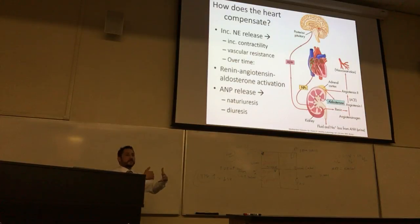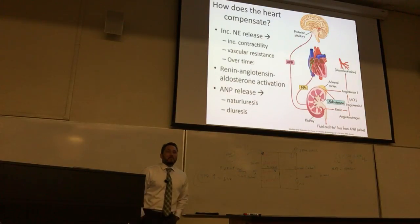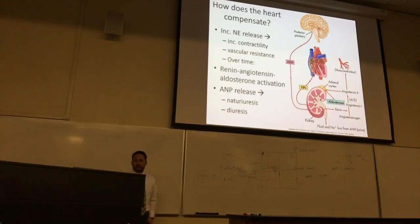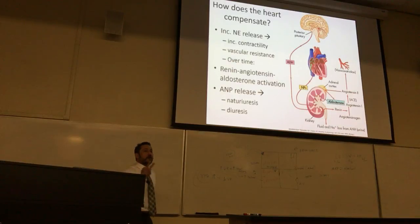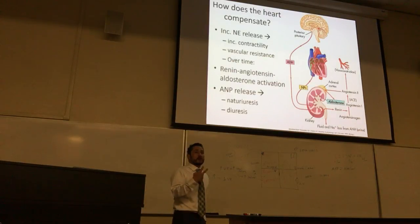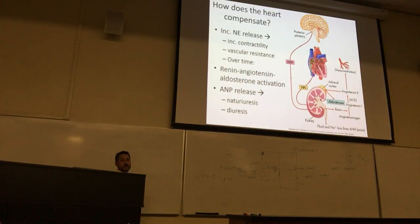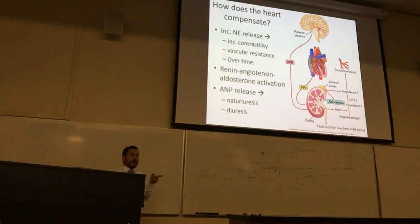This leads to the second mechanistic pathway the heart tries in a failing situation: it conserves water. Looking at the renin-angiotensin-aldosterone system — renin is released and has activity at the level of the kidney, conserving water so you don't excrete it, increasing your fluid volume in blood circulation, which raises blood pressure.